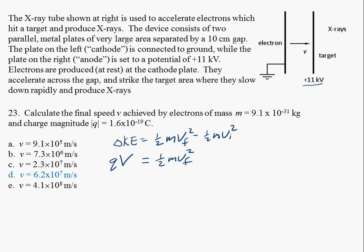And so we're trying to solve for v final, so I just get 2q, I'm just going to relabel this as delta V, so that's the voltage, divided by the mass. If we take the square root of that, that should give us the final velocity.